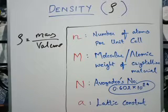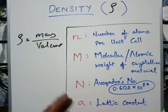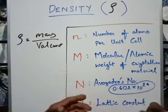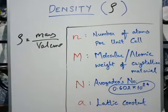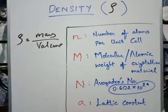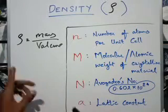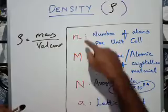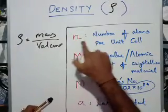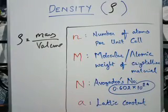So if we use the unit cell, the volume gives us the density. That is the variation. So if we use that unit cell, the density is derived from the number of atoms per unit cell.